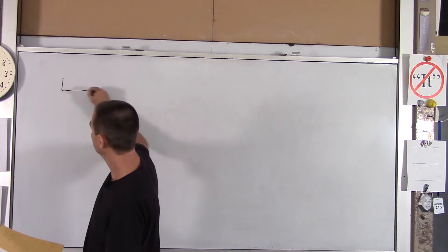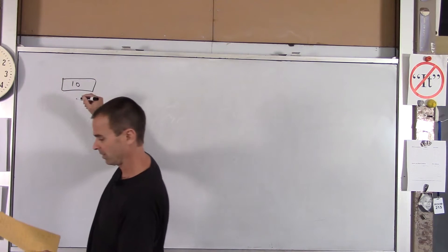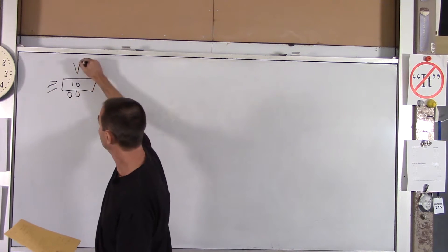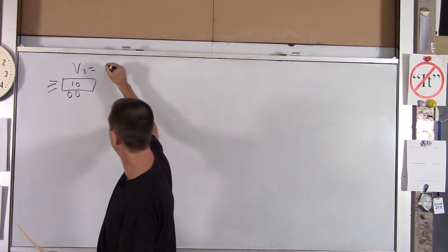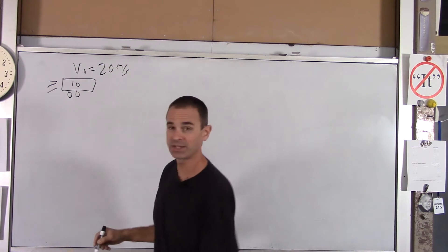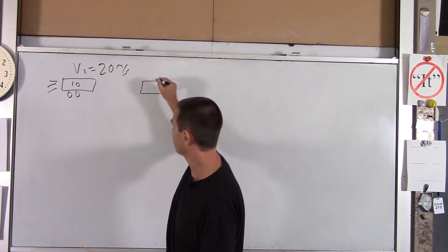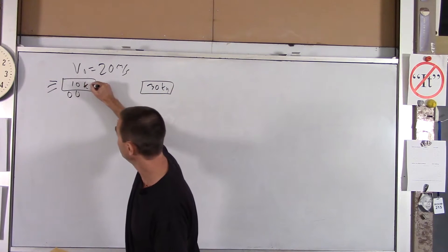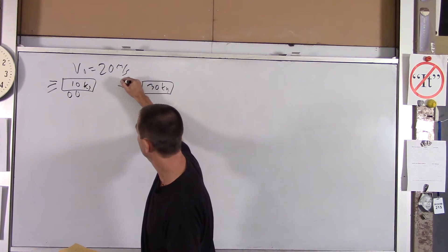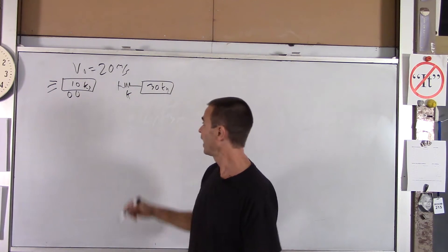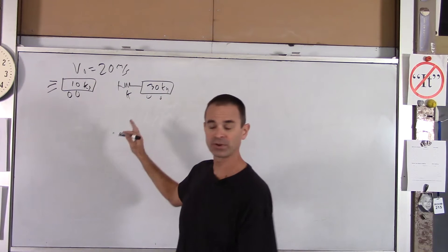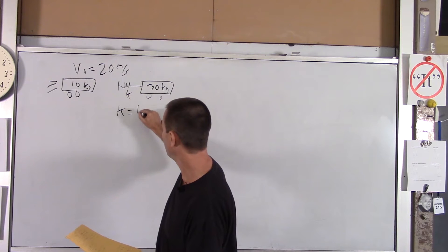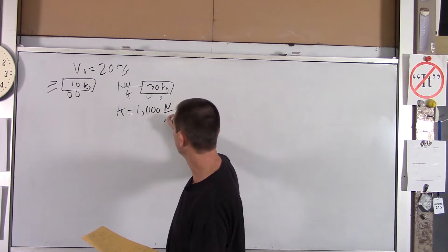We're going to have two carts. One is 10 kilograms and he's moving to the right with a velocity of 20 meters per second. He is going to collide with a bigger cart whose mass is 30 kilograms. There's a spring attached to this cart with spring constant K, and we'll put wheels on it — no friction or anything. We'll say K is 1,000 newtons per meter.